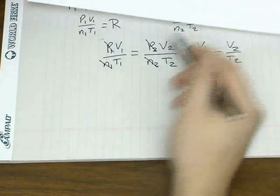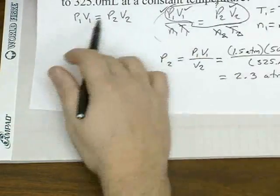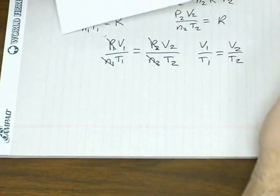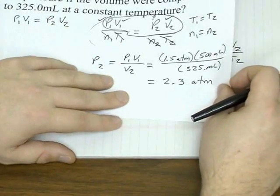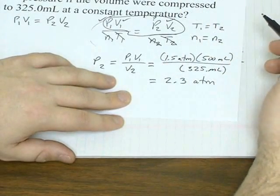One other thing about using the combined gas law or any of these other types of gas laws that we mentioned like Boyle's and Charles. When you're working with the combined gas law and some of the offshoots of it, one thing to keep in mind is units, which you should do for really any equation you work with.